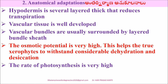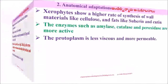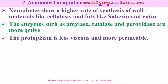The rate of photosynthesis is very high. Xerophytes show a higher rate of synthesis of wall materials like cellulose and materials like suberin and cutin. The enzymes such as amylase, catalase, and peroxidase are more active. The protoplasm is less viscous and more permeable.